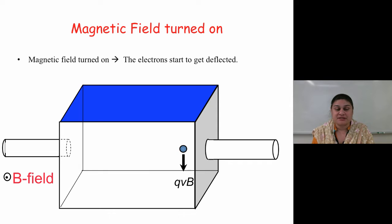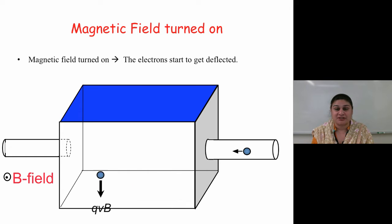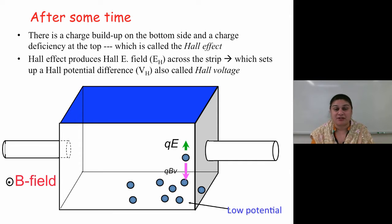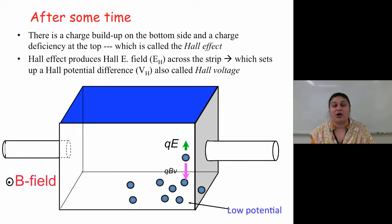Now, what happens if a magnetic field is turned on? The electrons will start to get deflected. With the B field pointing inwards, an electron will start to be deflected downwards. After a little while, there will be a charge buildup on the bottom side of this conductor, and there will be a charge deficiency at the top. This effect is called the Hall effect, and it effectively sets up what we call the Hall potential — the potential difference set up due to this particular scenario.